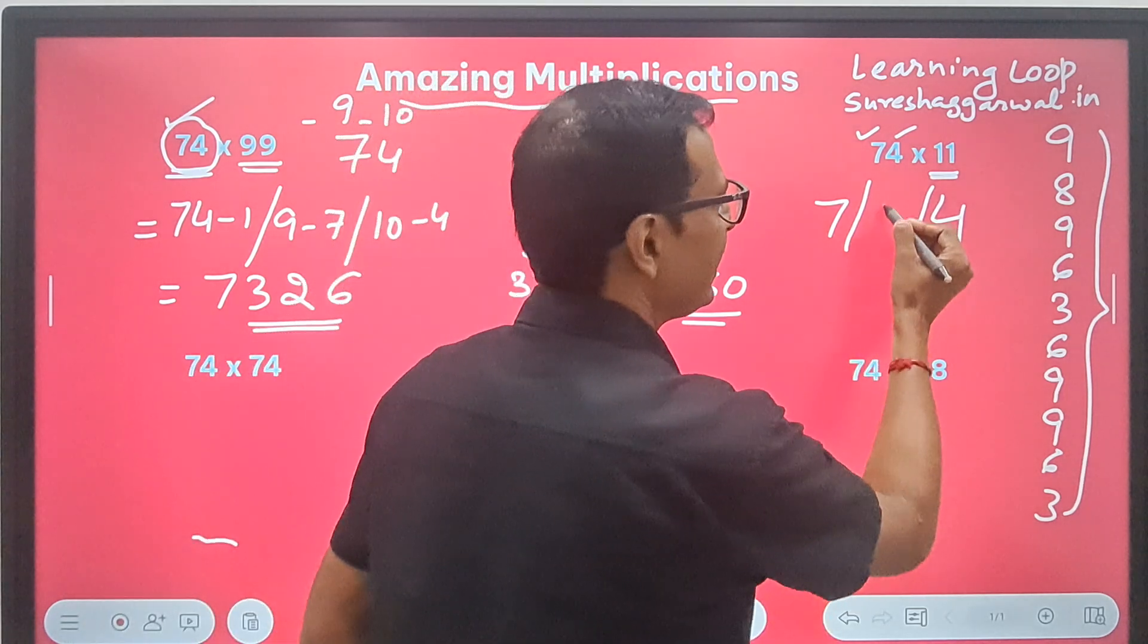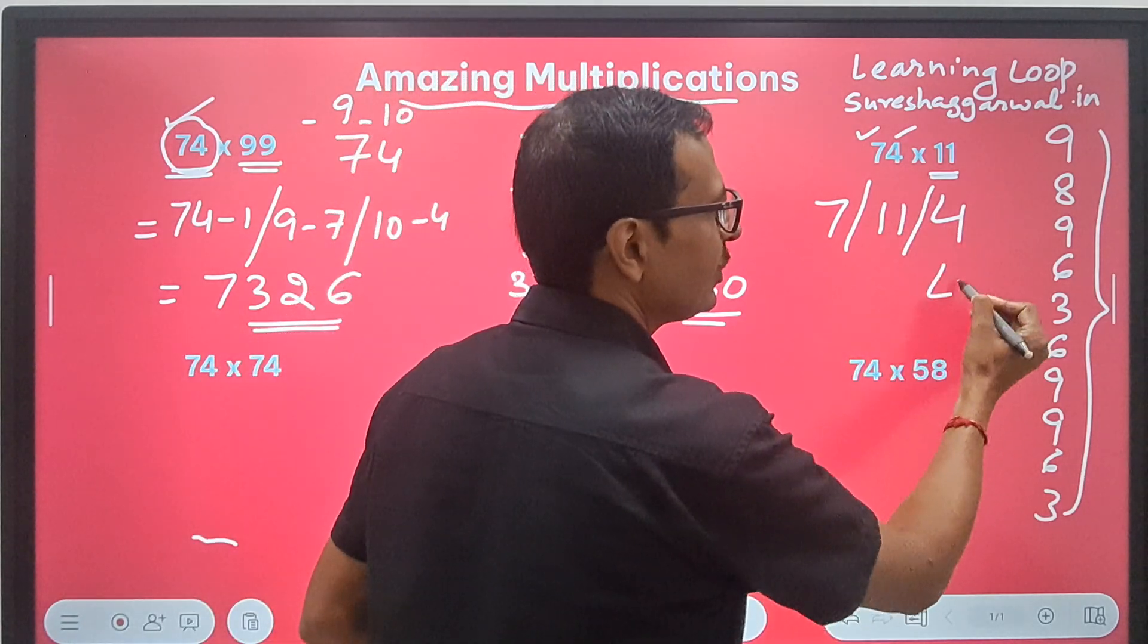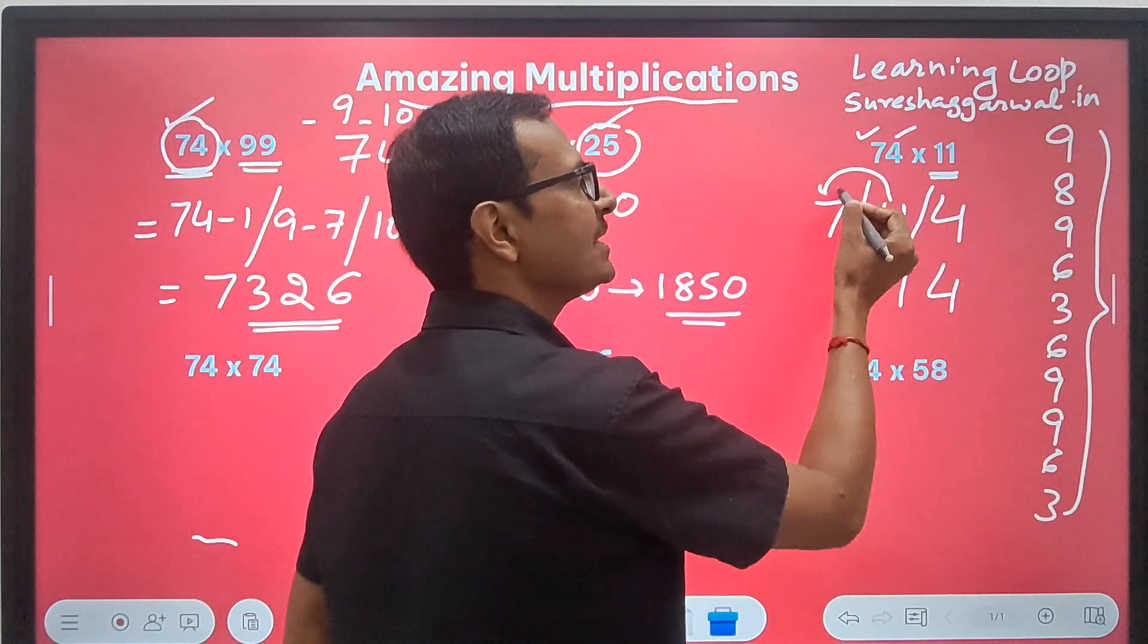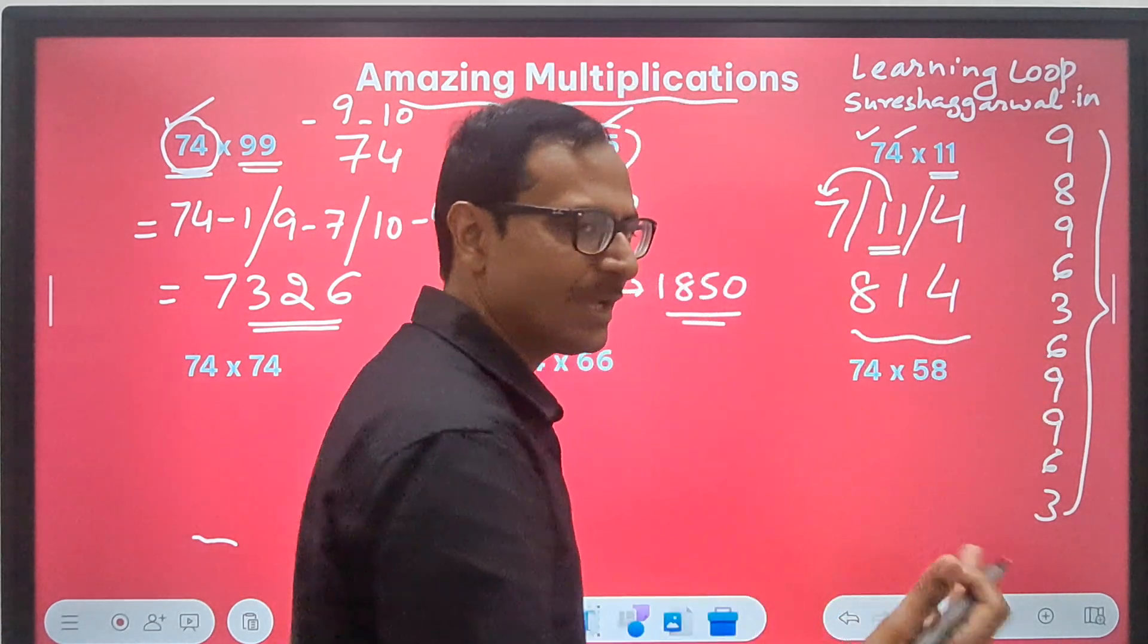Is 11, right? So, I will write 11 here. Now, retain the unit digit 4. Retain the unit digit from here. Carry forward the 10th digit. 7 plus 1 is 8. And here you have the answer.